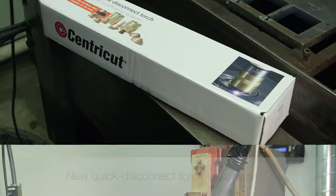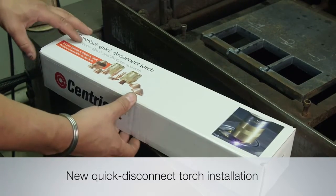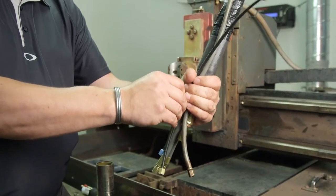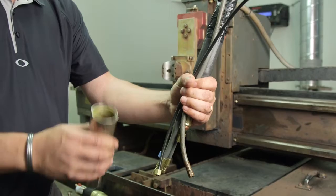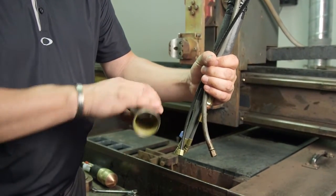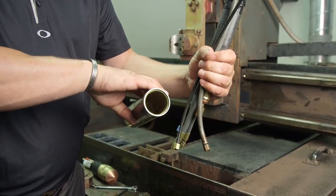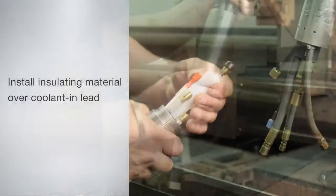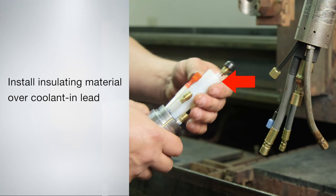Now we're ready for the new torch installation procedure. Roughly align the new plasma gas hose to the other hoses, then feed the mounting tube over all of the hoses. Be certain that the threads of the mounting tube are facing toward the bottom. Install insulating material over the coolant in lead. This is the longest lead on the torch base.